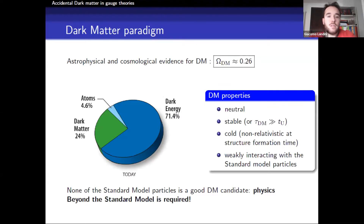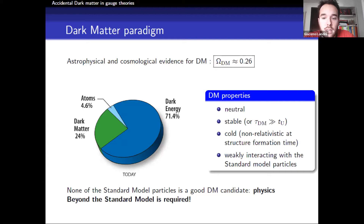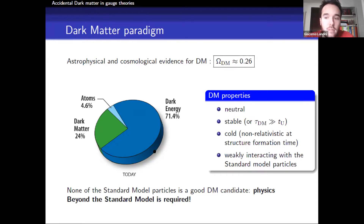We know from astrophysical and cosmological data that about one-fourth of our universe is composed of dark matter. We know the main properties of dark matter: it must be a neutral particle, stable or at least very long-lived, cold — meaning non-relativistic at the time of structure formation — and weakly interacting with the standard model particles. To satisfy all these requirements, we need some new physics beyond the standard model.